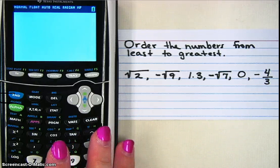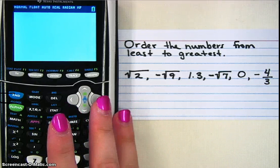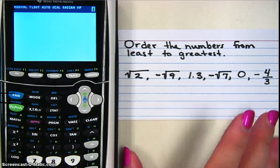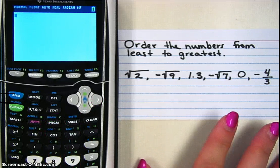Today I'm going to show you how to order numbers from least to greatest using a calculator. We can also go greatest to least as well, and I'll show you that afterwards.